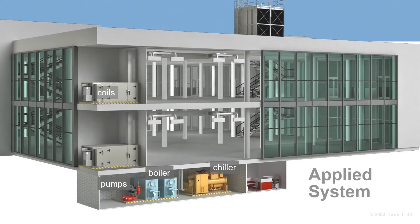When we talk about applied systems, we assume that the system contains a centralized chilled water generator, typically a chiller, and a centralized hot water generator, typically a gas-fired boiler. Pumps move the water from the centralized plant through a network of pipes to the terminal units, often coils. The coils then transfer their energy to the space being conditioned, and the water enters the return line and is pumped back to the central plant.